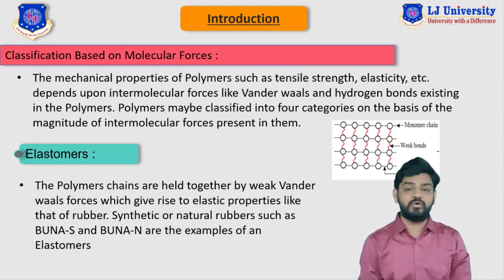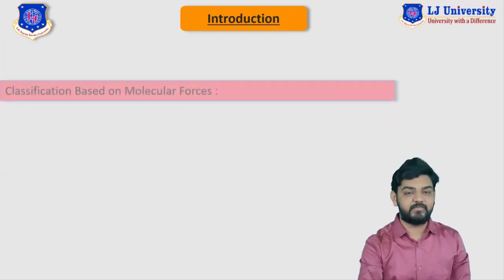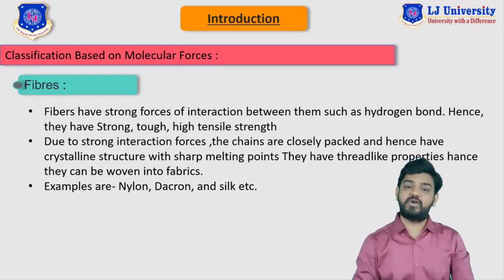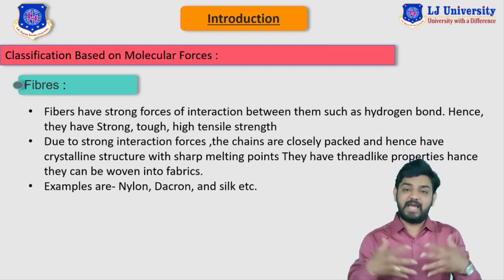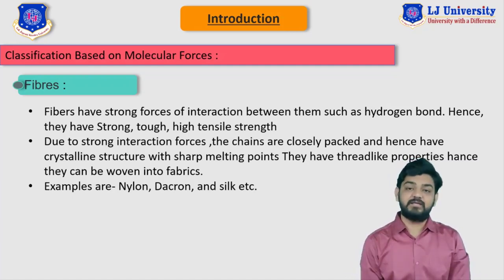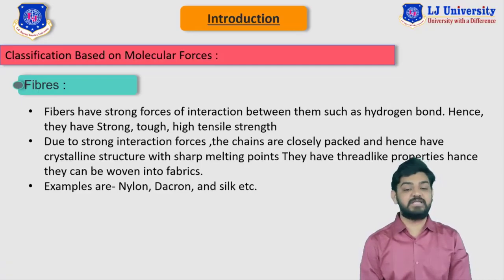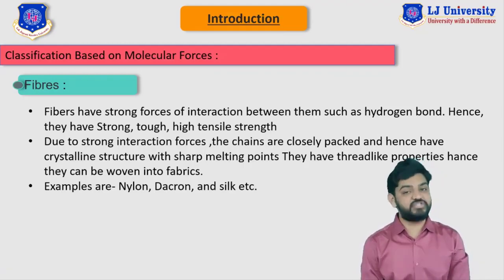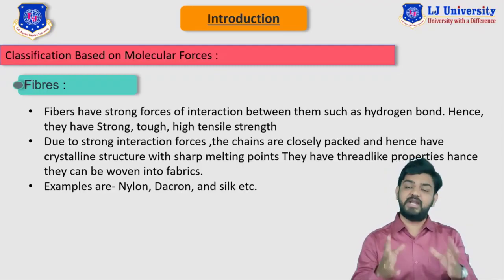Now let's move to the next type: fiber. Fibers are joined or held together with strong hydrogen bonds. It is not easy to break these hydrogen bonds, hence the fiber molecules are very tightly packed and very close to each other, providing thread-like properties. Fibers have strong, tough, and high tensile strength. Their density is also very high due to this strong interaction force.